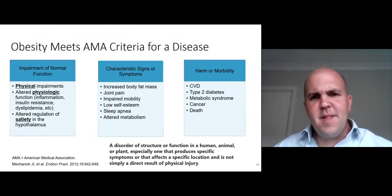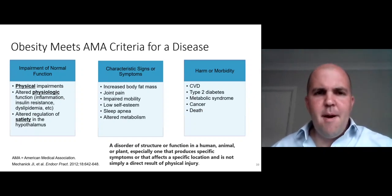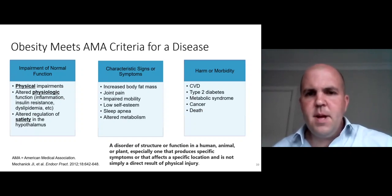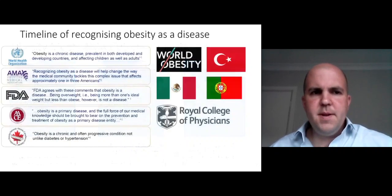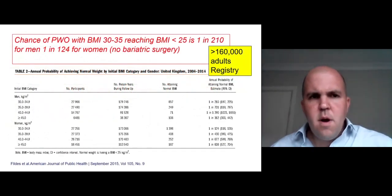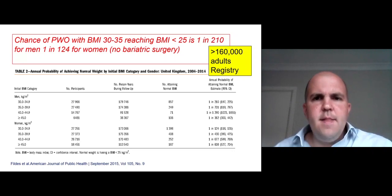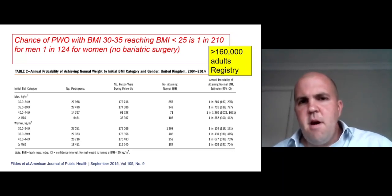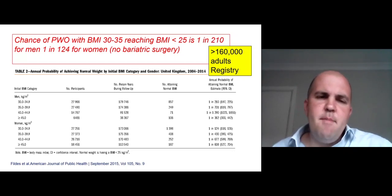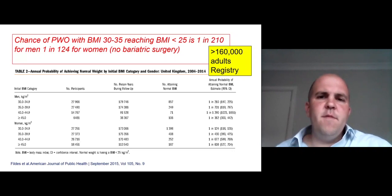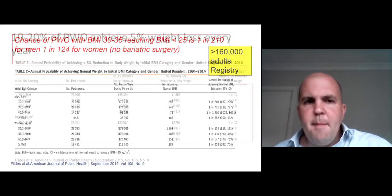Obesity certainly meets the American Medical Association criteria for disease: associated with impairment of function, characteristic signs or symptoms, and unfortunately significant harm or morbidity. A number of organisations and countries have already recognised obesity as a disease. It is possible to change body weight, whilst being extremely difficult — in one study, the chance of a person with obesity and a BMI of 30–35 reaching a BMI of less than 25 was 1 in 210 for men and 1 in 124 for women, in an observational study — not a dieting study.